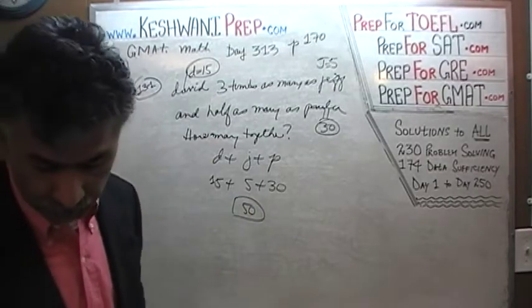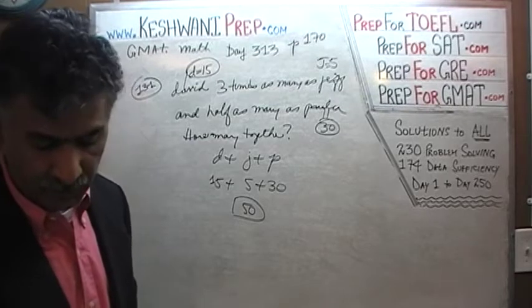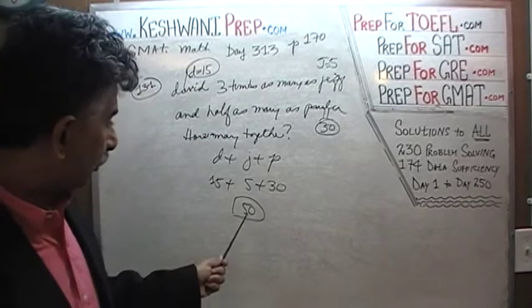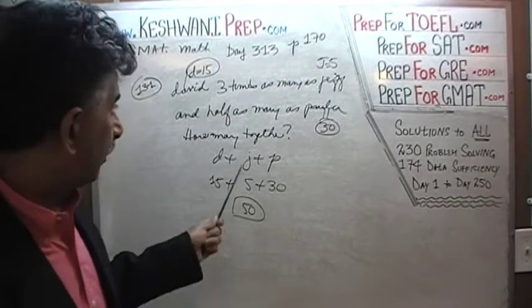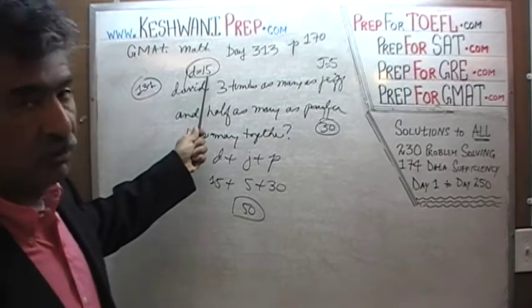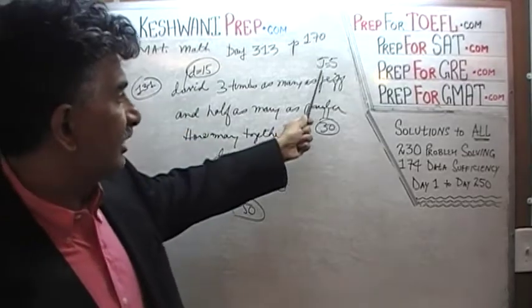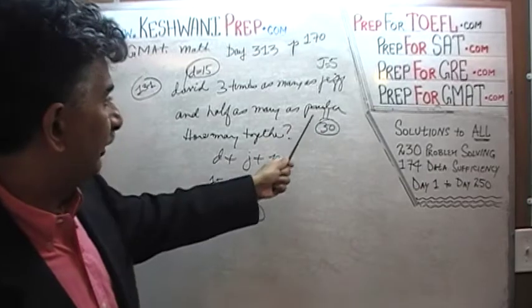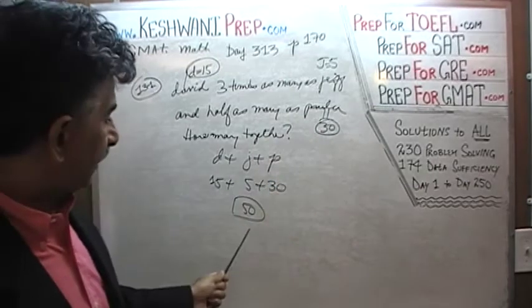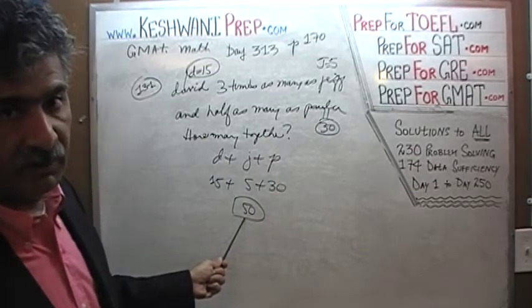So D plus J plus P would be 15 plus 5 plus 30, that's 50. That's our answer, that's our punchline. All we have to do now is go through all the answer choices and wherever we see D we substitute it with 15, wherever we see J we replace it with 5, wherever we see P we replace it with 30, until we come upon an answer that works out to be 50.